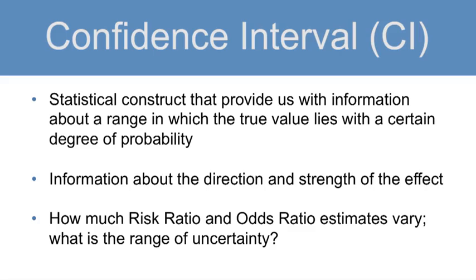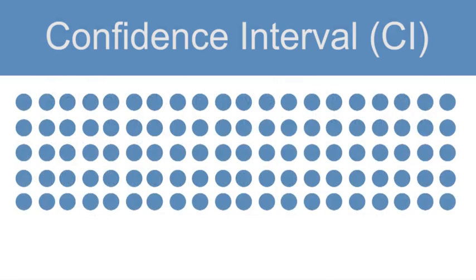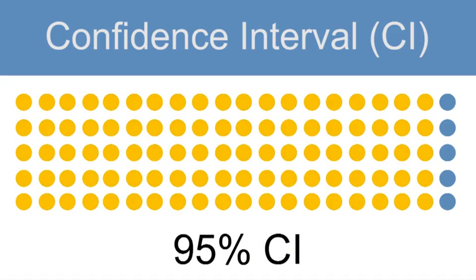We can answer the question: what is the range of uncertainty about our estimate? If we perform an experiment 100 times and calculate an estimated risk ratio each time, the 95% confidence interval is expected to contain the true value of the risk ratio 95 out of 100 times. 95% is a commonly used confidence interval; however, sometimes you might also see 90% or 99% confidence intervals.